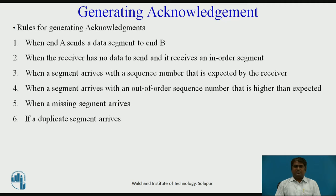The third rule: when a segment arrives with a sequence number that is expected by the receiver and the previous in-order segment has not been acknowledged, the receiver immediately sends an ACK segment. There should not be more than two in-order acknowledgement segments at any time. This prevents unnecessary retransmission of segments that may create congestion in the network.